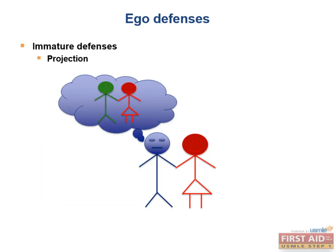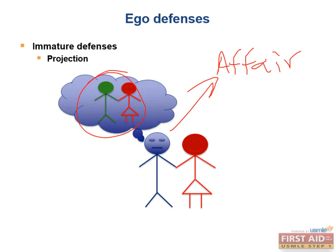Now we have projection. Projection refers to unconsciously rejecting one's own unacceptable internal impulse by ascribing them to an external source in order to feel better with oneself. For example, a man who wants to cheat on his wife suspects that his wife is cheating on him, because that makes him feel less guilty about wanting to cheat on her. So he took his own unacceptable internal impulse and ascribed it to his wife.